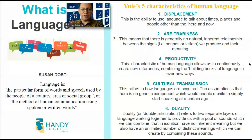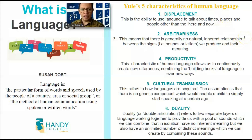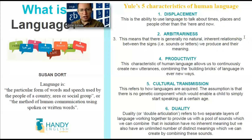Let's take a look at displacement first. This is the ability to use the language to talk about times, moments, places, and people other than the here and now — meaning when we have the ability to talk about the future or talk about the past, and to be able to understand those terms and concepts. This is called displacement because we are not talking about the here and now, but about abstract concepts.